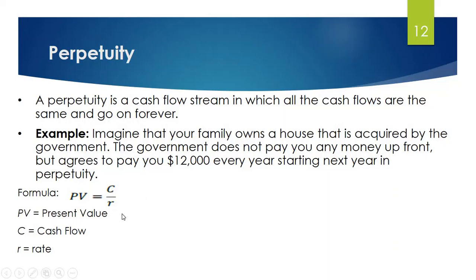The formula to find out the present value of a perpetuity is simply C divided by R, where C indicates the cash flow, R is the discount rate, and PV is the present value of the perpetuity.